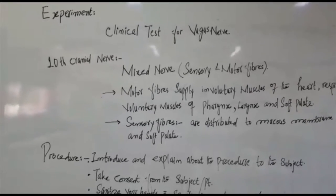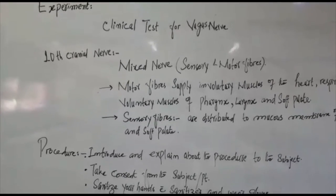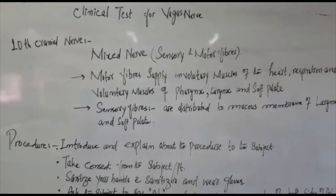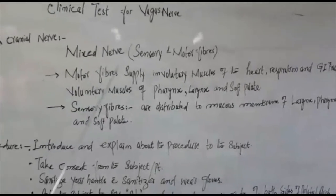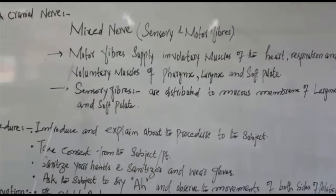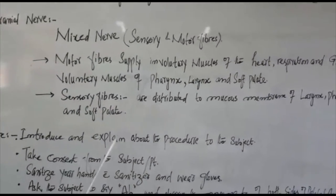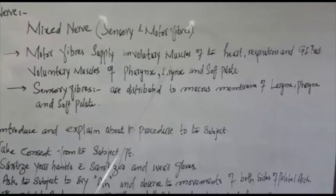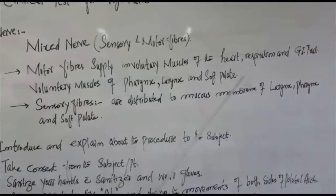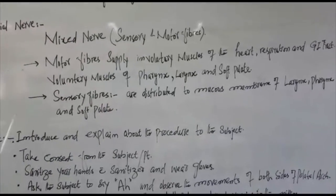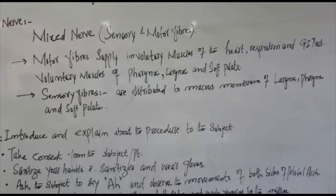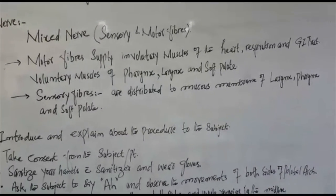Vagus nerve is the 10th cranial nerve. It is a mixed nerve — it has sensory and motor fibers. Motor fibers supply involuntary muscles of the heart, respiration, and GI tract, and voluntary muscles of the pharynx, larynx, and soft palate.